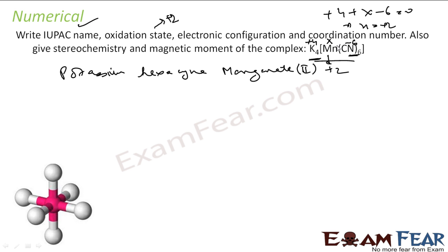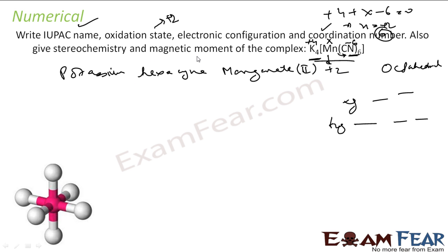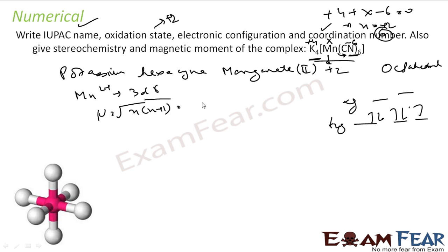Now the electronic configuration. First, the coordination number: there are 6 bonds between Mn and CN, so coordination number is 6 — that means octahedral splitting, giving T2g and eg levels. Mn2+ has electronic configuration 3d5. CN minus is a very strong field ligand, so it forces pairing. First, second, third electron fill T2g; fourth and fifth also come to T2g by pairing. The number of unpaired electrons is only 1. Magnetic moment = root of 1×3 = root 3 = 1.73 BM.